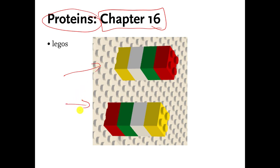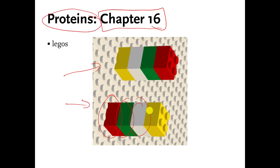Usually I show this to my on-ground students and I say, here's two stacks of Legos, and I try to get in an argument with people and I say, are these two stacks of Legos identical to each other? Usually the students say no, which is the correct answer, but I try to argue about it and I say no, they're the same thing because you've got red, green, white, yellow — red, green, white, yellow — so they must be identical to each other. Obviously that's not true, and the reason it's not true is because there's a difference between the top of the stack and the bottom.